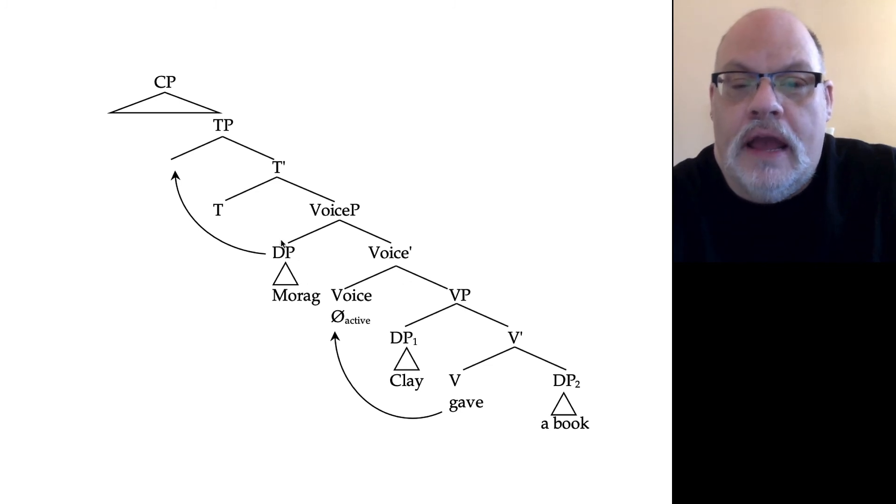We claim that agents are disconnected and introduced by the voice head. So we've introduced our agent in the specifier of the voice phrase. This gets our arguments in the correct configurations for binding theory. This first DP c-commands the second DP, which is precisely what we want. But this is not the order of elements in English, right? You don't say Morag Clay gave a book. No, you say Morag gave Clay a book. So what we're going to propose is that short verb movement I mentioned before happens here, and that will actually result in the correct order. The V head will move into this position and give us gave Clay a book.